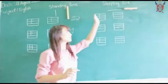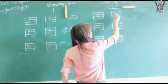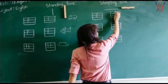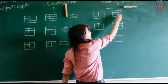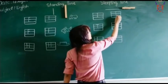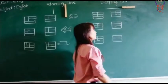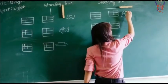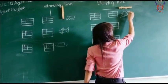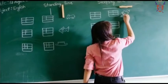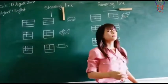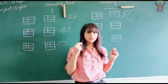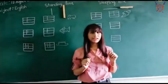Next letter is I. For I you have to draw one sleeping line, then one standing line, then one sleeping line. I for ice cream. I love to eat ice cream. I know you all love to eat ice cream, right?